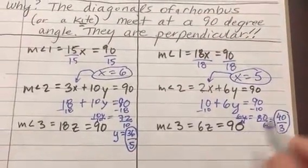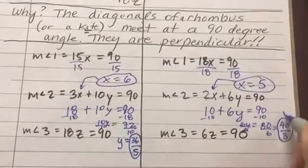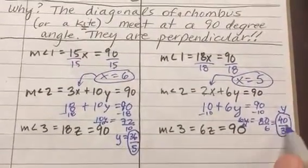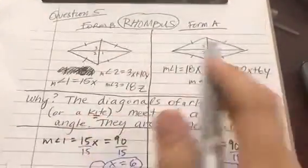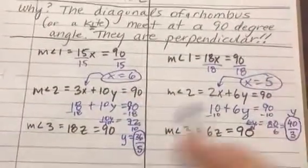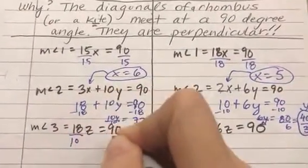Now finally, to solve for z, so this is our y value on version B and version A. This is our x value. Last but not least, let's solve for z.